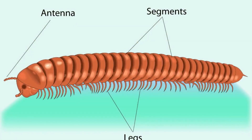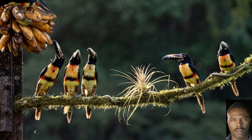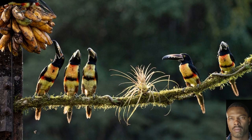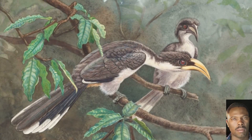In Form 1, we covered Classification 1. We identified the major taxonomic units as Kingdom, Phylum or Division, Class, Order, Family, Genus and Species.